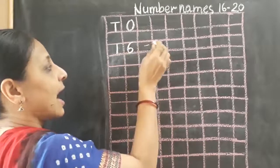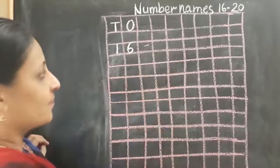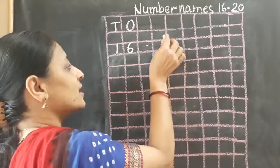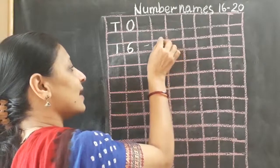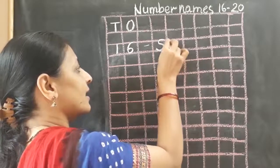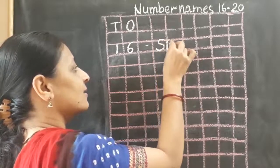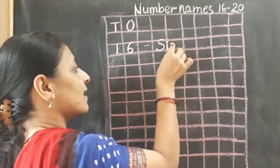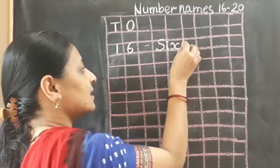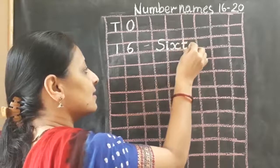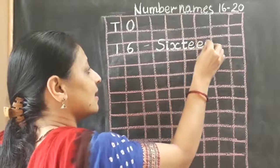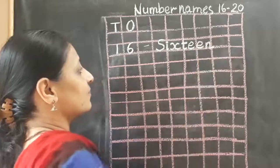Now I will write the spelling of 16. What is the spelling of 16? S, I, X, T, E, E, N. 16.